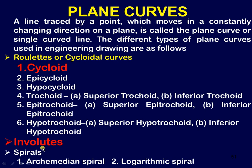The next one is the involute. The third one is the spiral. There are two different types of spirals — one is the Archimedean spiral and the other one is the Logarithmic spiral. But as per the university syllabus, you have only these two: the cycloid and the involute.